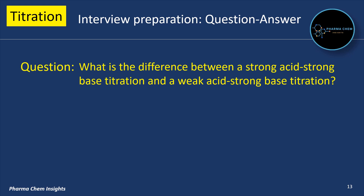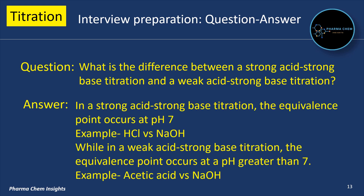Next question: what is the difference between a strong acid strong base titration and a weak acid strong base titration? In a strong acid strong base titration, the equivalence point occurs at pH 7. An example is HCl versus NaOH, where HCl is the strong acid and NaOH is the strong base. In a weak acid strong base titration, the equivalence point occurs above pH 7. An example is acetic acid versus NaOH, where acetic acid is the weak acid and NaOH is the strong base.